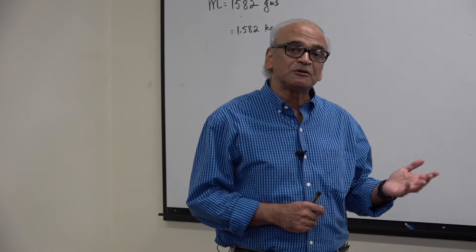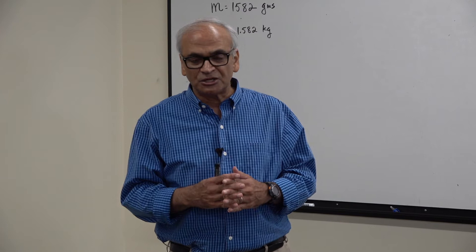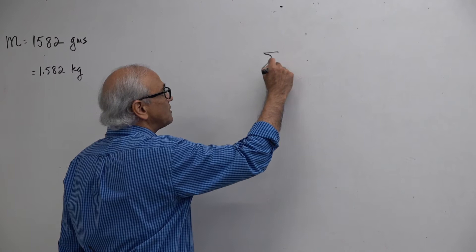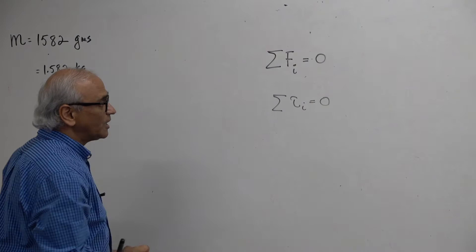So what are the equilibrium conditions? First of all, when we say equilibrium, what we mean is the system doesn't have any acceleration. A system can move with uniform velocity — that would also be an equilibrium condition. But usually in the lab setup, we are talking about something which is not moving. There are two conditions: summation of all forces should be equal to zero, and summation of all torques should be equal to zero.